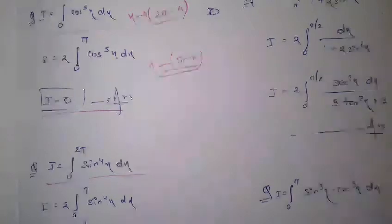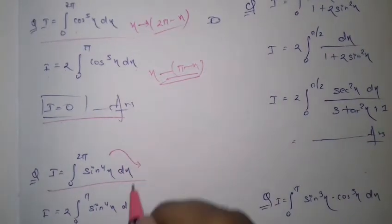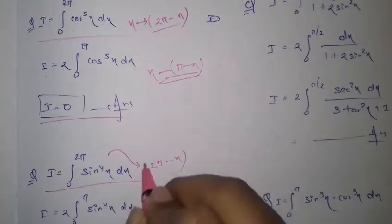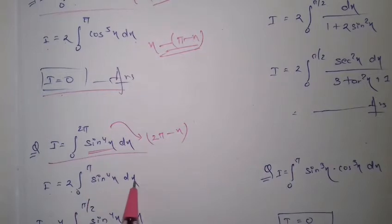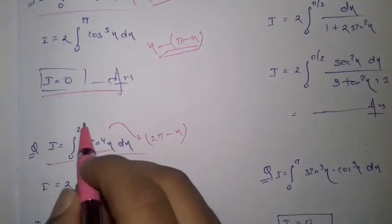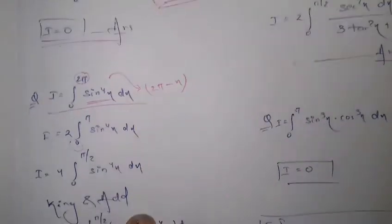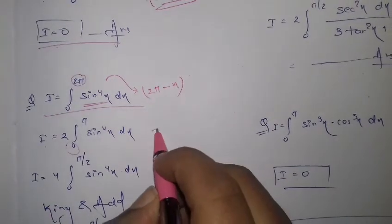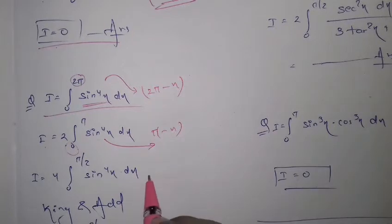Next question: I = ∫₀^(2π) sin⁴x dx. You could use the cos 2x formula, but we'll use properties. Check 2pi minus x — the function value doesn't change, so I = 2 ∫₀^π sin⁴x dx. Check again with pi minus x — it still doesn't change, so I = 4 ∫₀^(π/2) sin⁴x dx.